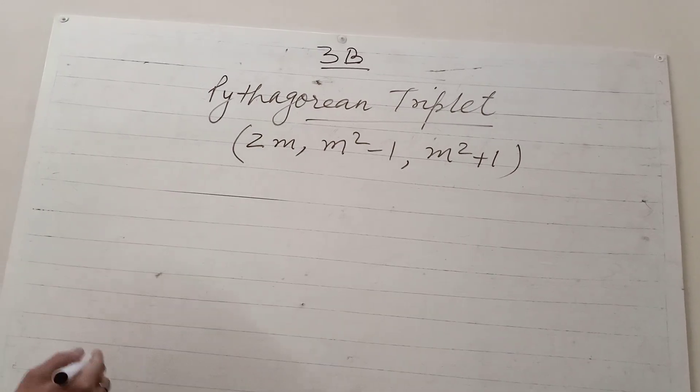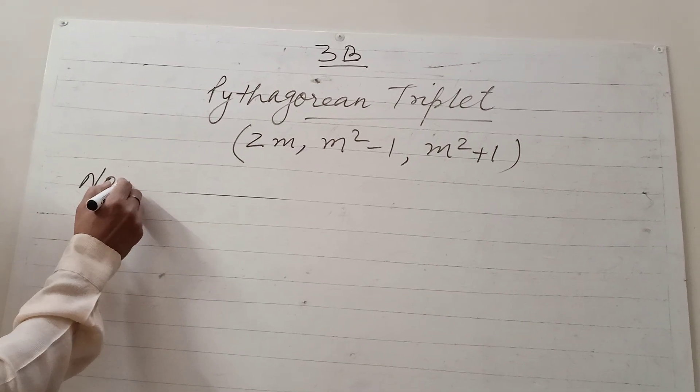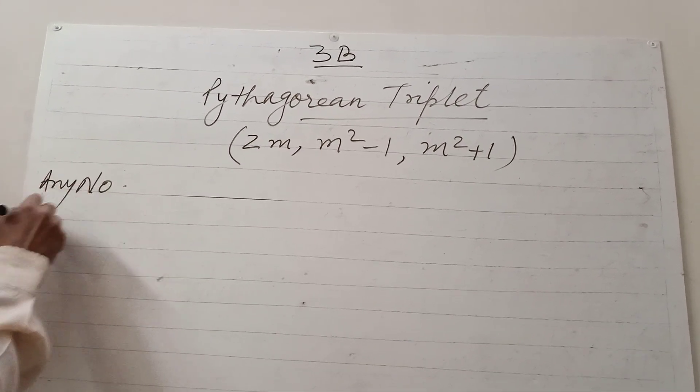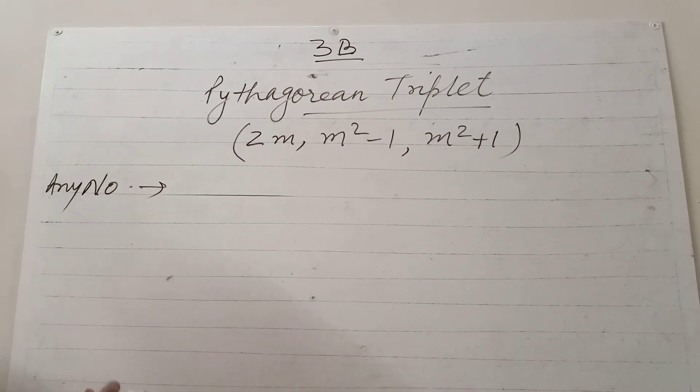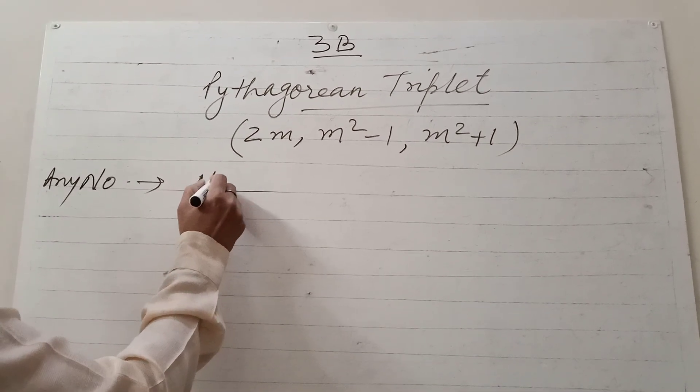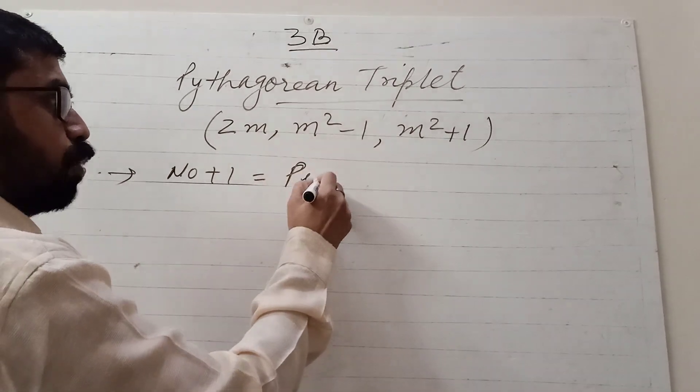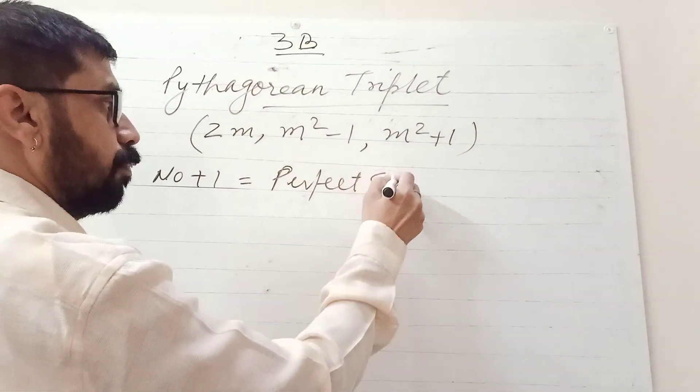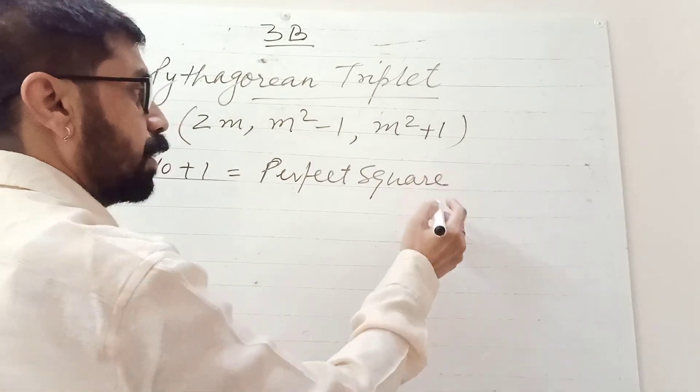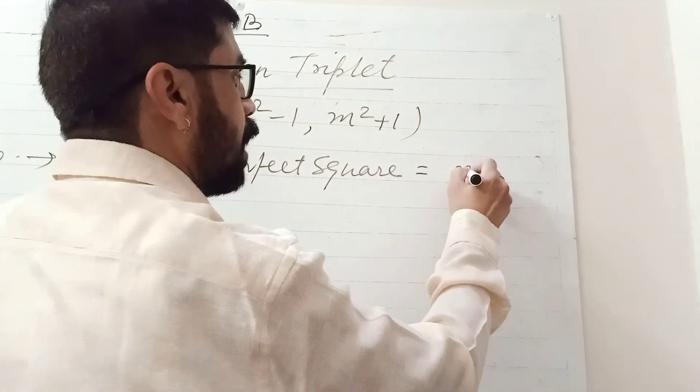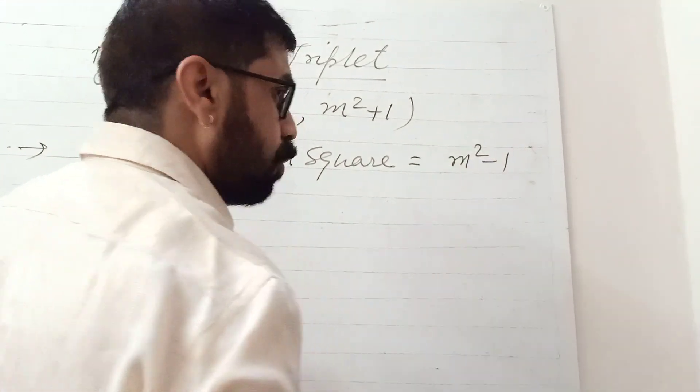Suppose any number is given. If this number plus 1 equals a perfect square, then it is the value of m² - 1.